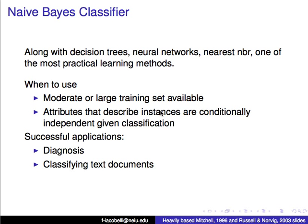When do you want to use this? Well, when you have a moderate to large training set available, and when you have attributes that describe instances that are conditionally independent given the classification — for example, symptoms that are apparently independent from each other on the surface. Successful applications include diagnosis and also the classification of text documents, which we'll see in a different video.